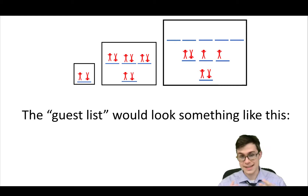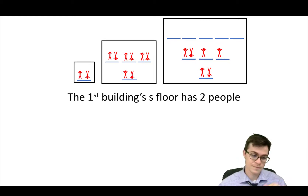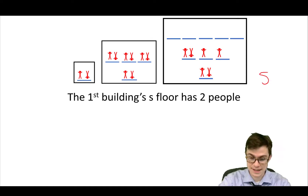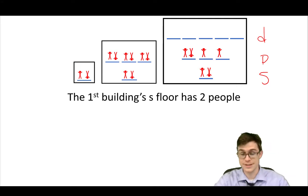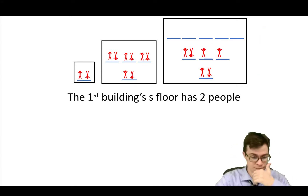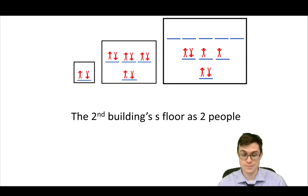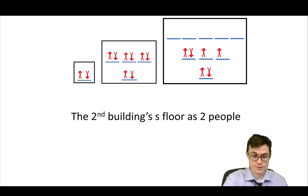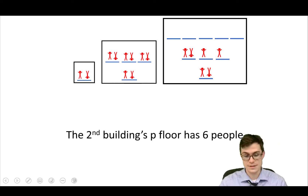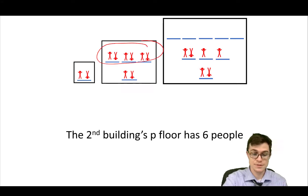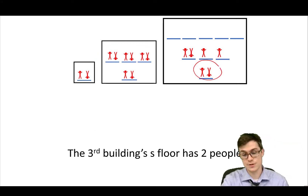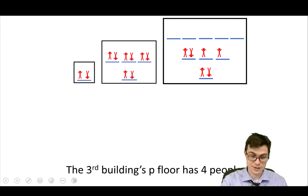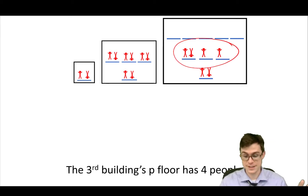It's basically just a guest list. The guest list of this apartment complex would look like this: the first building's S floor has two people. You remember this is the S floor, the P floor, the D floor, and the fourth floor is called the F floor — that's just the way chemists named it. The second building's S floor also has two people. The second building's P floor has six people. The third building's S floor has two people, and the third building's P floor has four people. That's all the people living in this apartment complex.